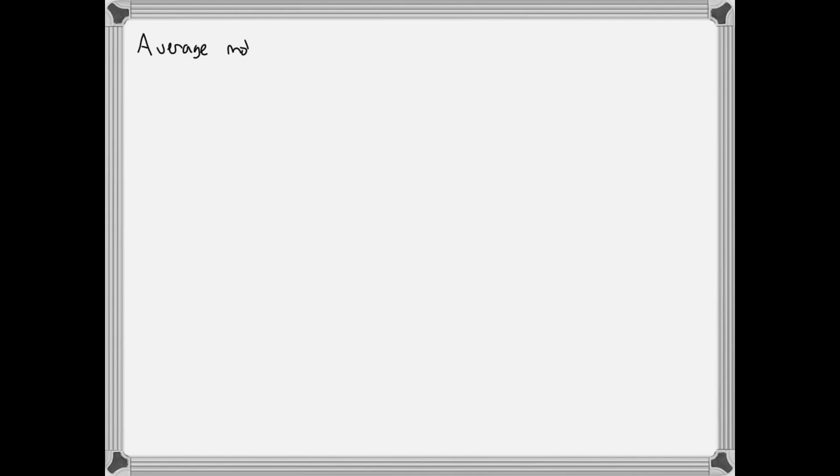To determine the percent abundance of the heavier isotope, we first need to look up the average, weighted average, atomic mass of rubidium. We can find this on the periodic table.